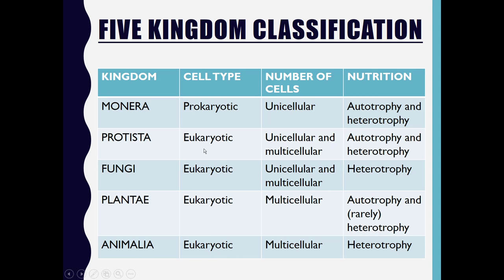Kingdom Protista has all organisms which are eukaryotic, may be unicellular or multicellular, and the mode of nutrition may be autotrophic or heterotrophic.